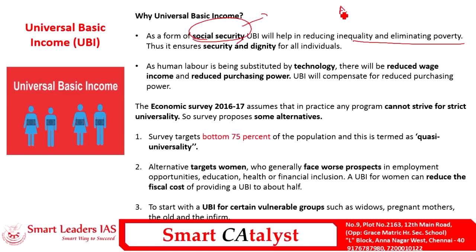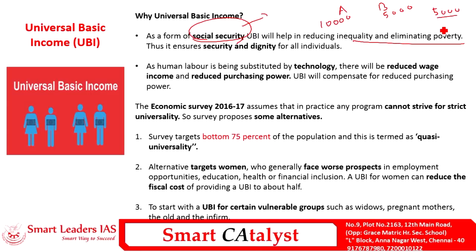For example, consider person A earning 10,000 per month and person B earning 5,000 per month — an income inequality of 5,000 exists. If the government provides rupees 2,000 as UBI to person B, his disposable income becomes 7,000, and the income difference is reduced to 3,000. By this way, income inequality is reduced.